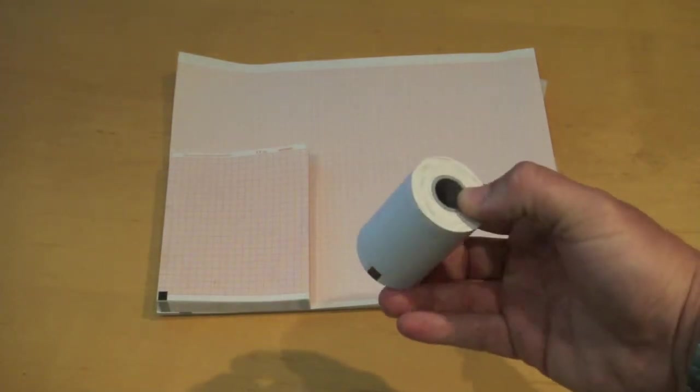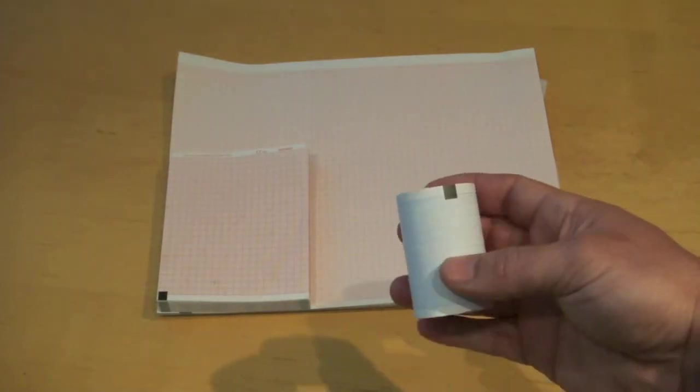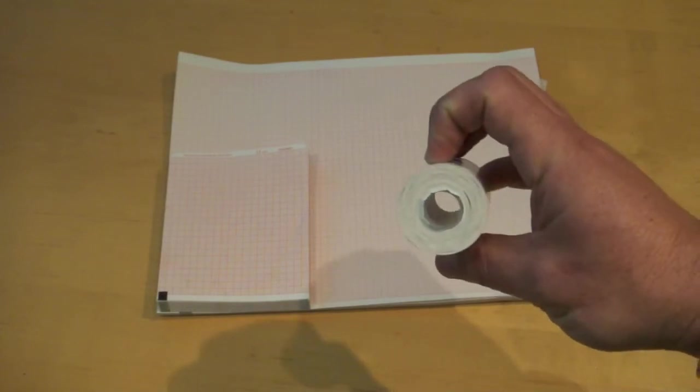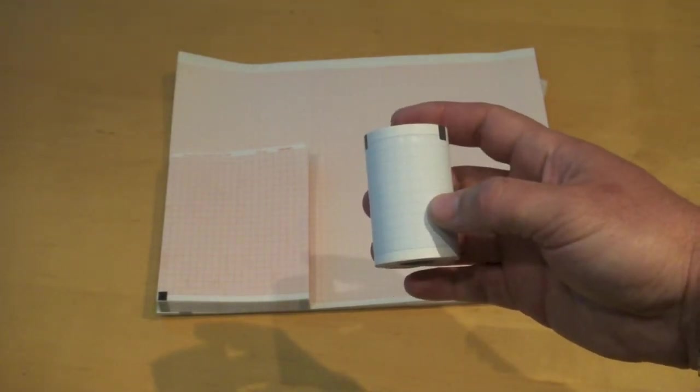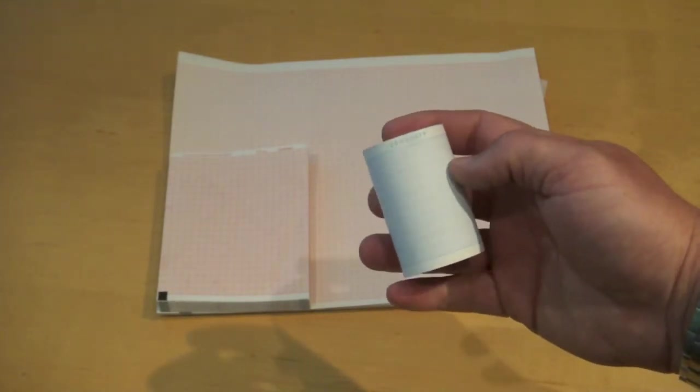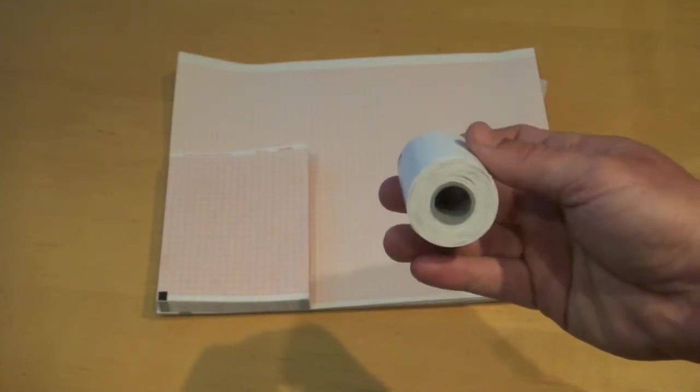Now there are also two methods of packaging. Some machines use a roll which looks like this particular three-channel paper. This particular paper is for a Cardioline AR600 and it is on a roll.